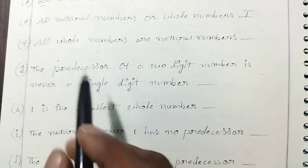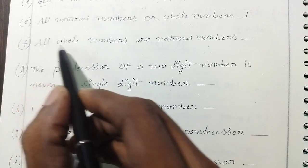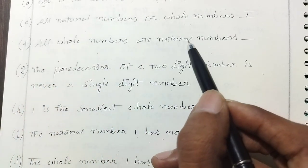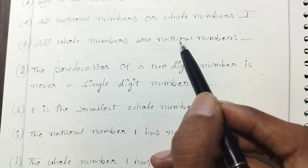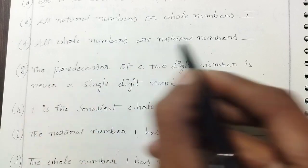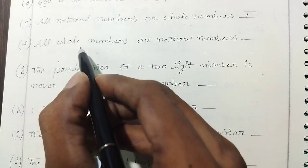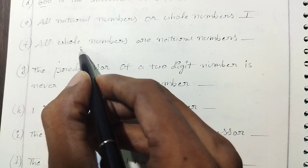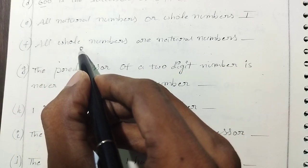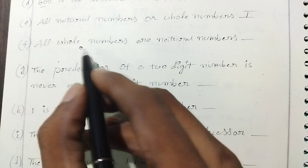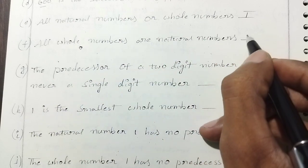Next: 'All whole numbers are natural numbers.' This is false. Whole numbers include 0, but 0 is not a natural number. So this is false.